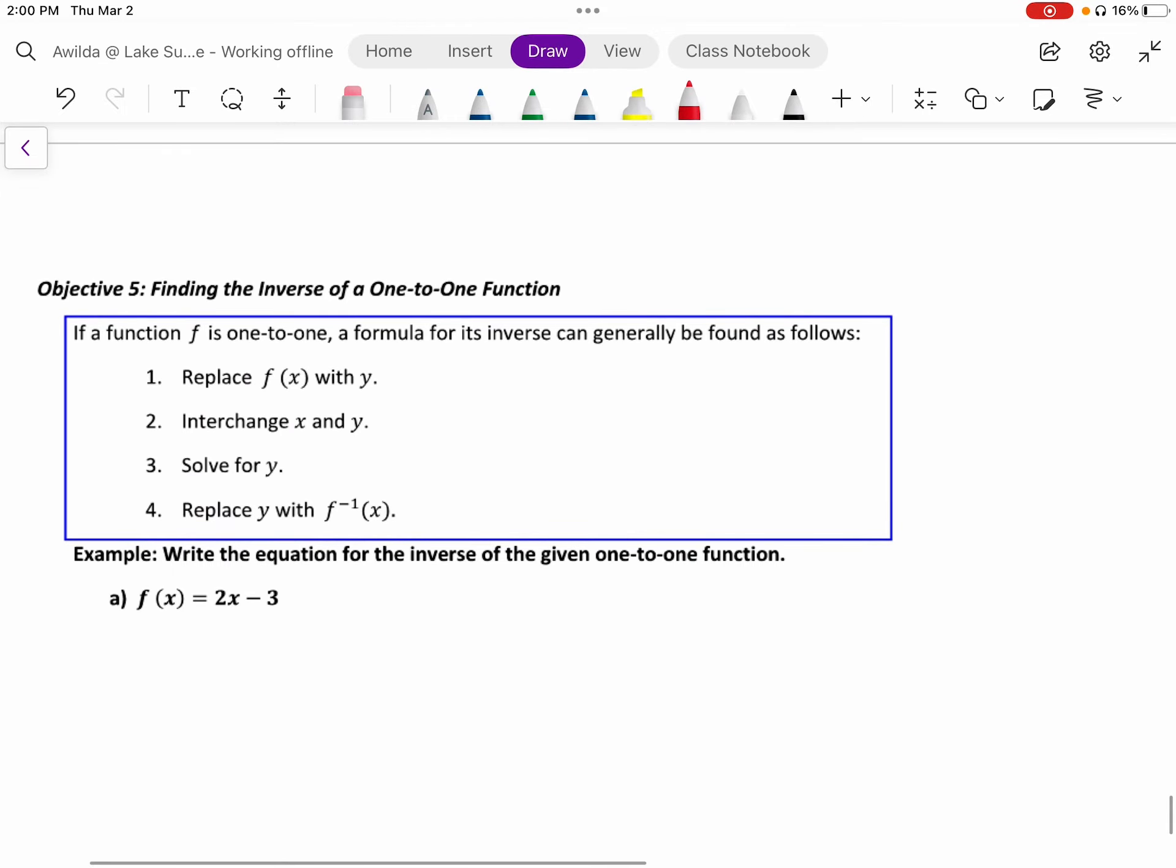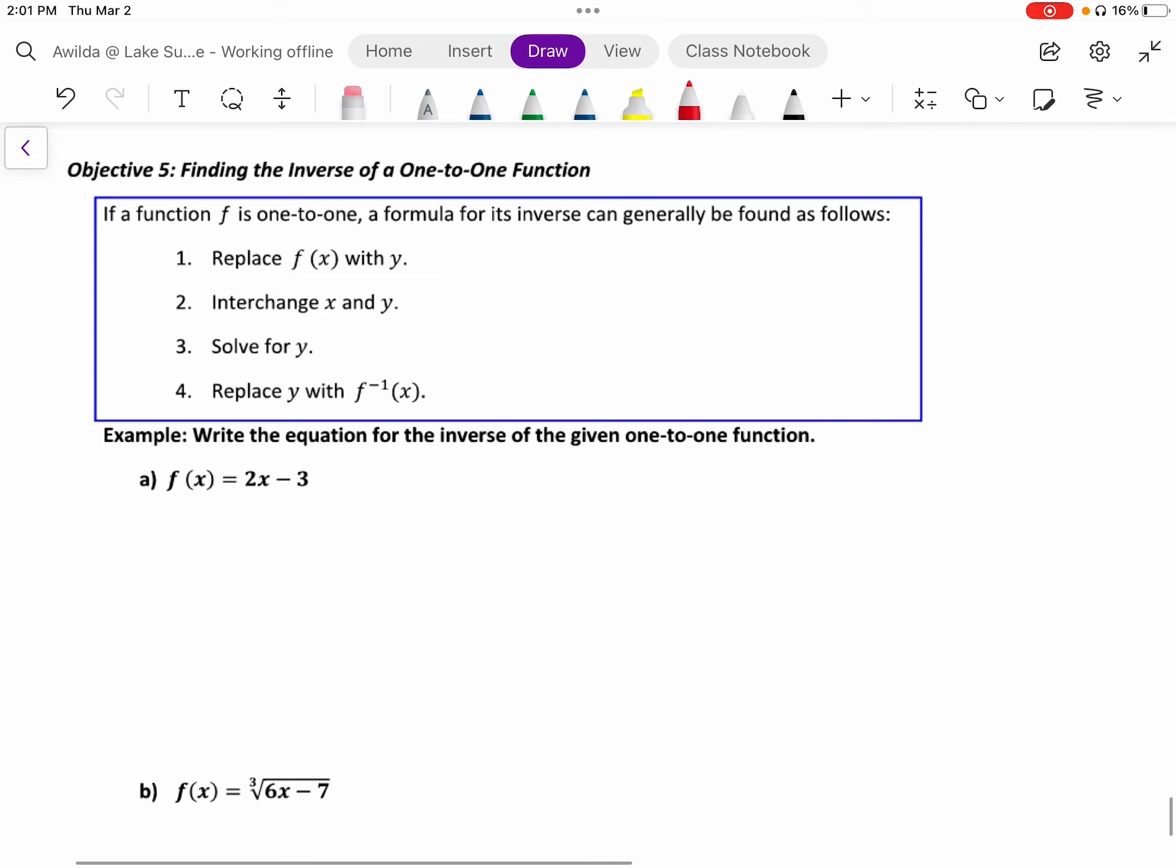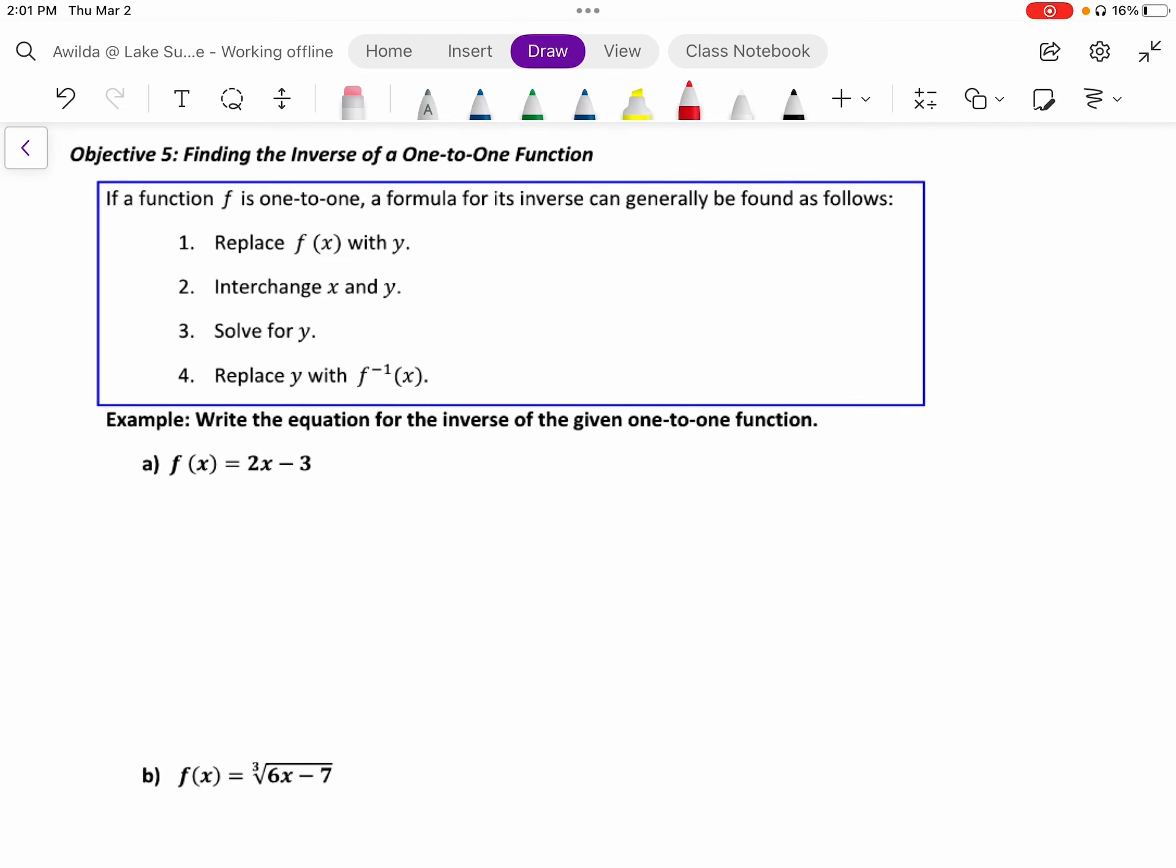Now let's look at the procedure for finding the rule for the inverse function when we have the rule for the original function f. Here are the four steps to follow. First, you're going to replace the notation f with the letter y. After all, they are synonymous. Next, we're going to change x and y, meaning where you see an x, you put a y. Where you see a y, you put an x. This is where the two variables swap roles. Third, we're going to isolate the new y variable. So we're going to solve for the new y variable. Finally, once you have y isolated, we're going to replace y with the new notation of f inverse.